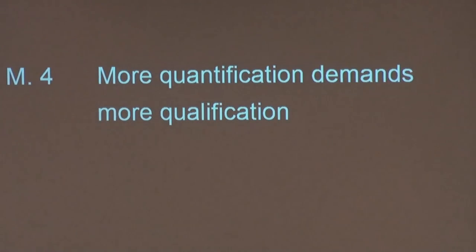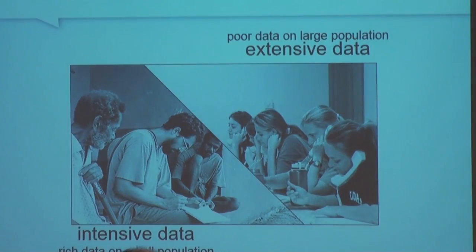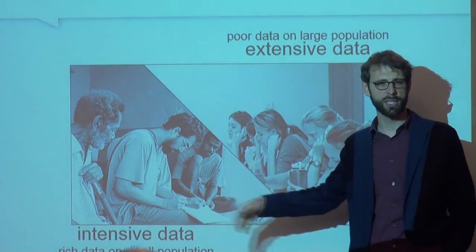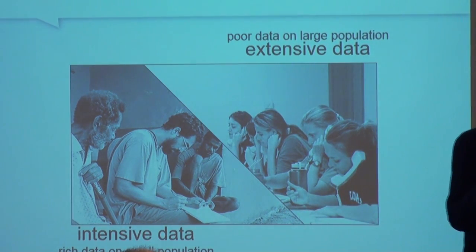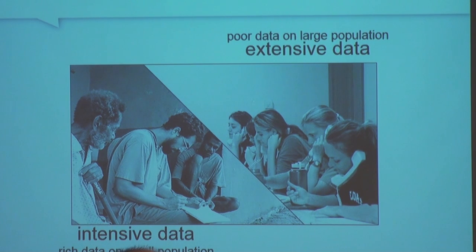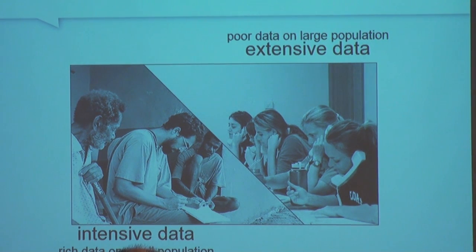I'm almost done. The last misunderstanding, which is possibly more relevant for those in social sciences, is that more quantification demands more qualification. That's rooted in the methods we use in social sciences — the distinction between qualitative and quantitative methods. Qualitative methods — anthropology, direct observation, in-depth interviews — allow you to collect intensive data, meaning rich data but about very small populations. Quantitative data — statistics, polls — allow you to collect extensive data, meaning broader but less rich data on large populations.